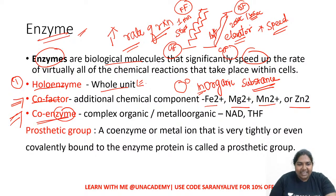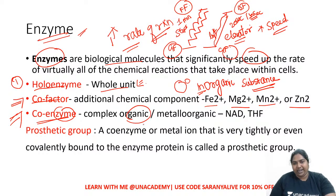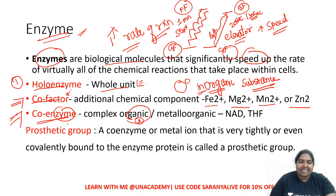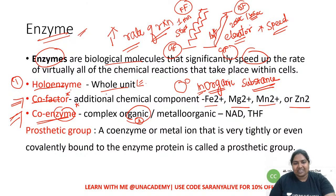A coenzyme is an organic component of the enzyme. If the component is inorganic, it is called a cofactor. If it is organic, it is called a coenzyme. Make sure you know the difference between a coenzyme and a cofactor.